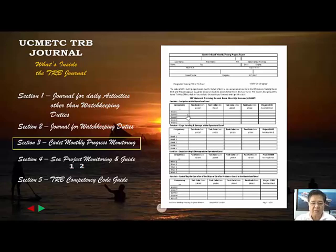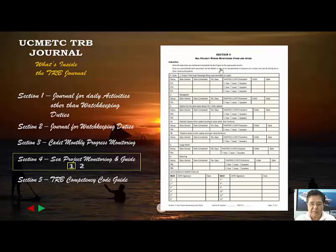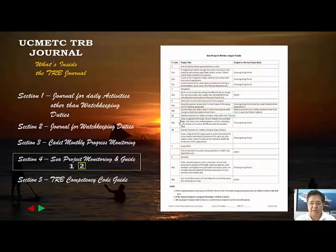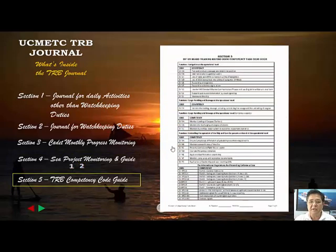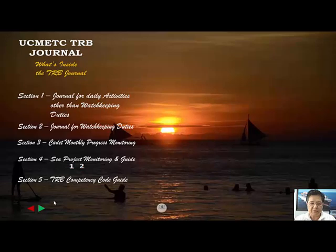The C project monitoring guide is section four — two pages: the first is the form and the second is the guide for tasks and outputs. Section five contains the task code guide for every competency in your training record book. Those are the main contents of this training record book journal.